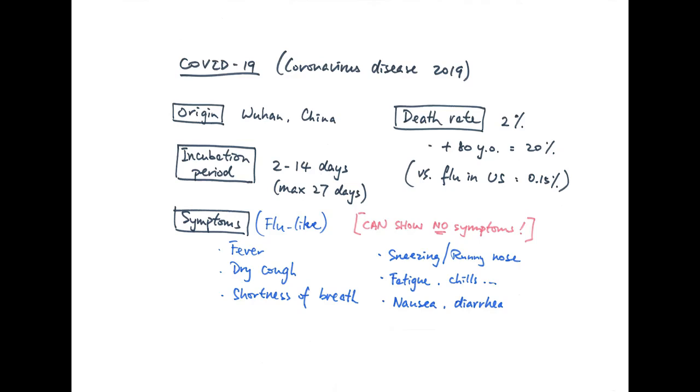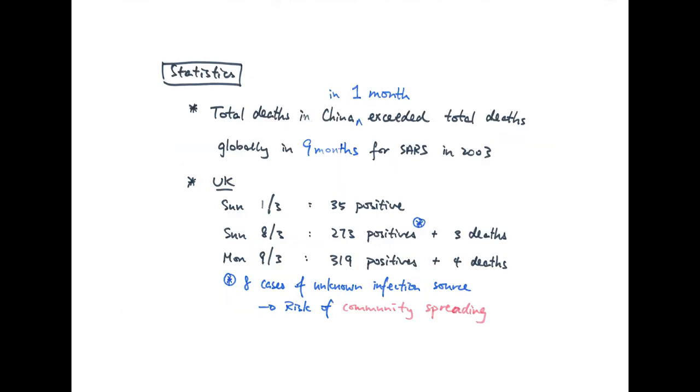On that note, let's look at some statistics. When the virus started spreading initially, it killed many people in China. The total number of deaths in China occurred during that first month exceeded the total number of deaths caused by SARS globally in nine months, which is in 2003. In other words, COVID-19 killed more people in one month in one single country compared to SARS globally in nine months.